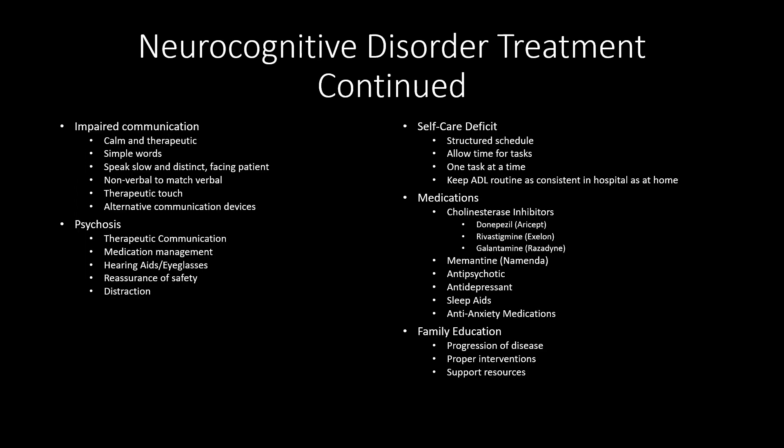For impaired communication, we communicate in a calm, therapeutic manner using simple words. We ensure hearing aids are on and working, along with eyeglasses and other sensory devices. We speak slowly, distinctly, and always facing the patient — never approaching from behind or the side — to avoid startling them. Nonverbal communication should match verbal communication, and we can use therapeutic touch or alternative communication devices such as written communication and pictures.